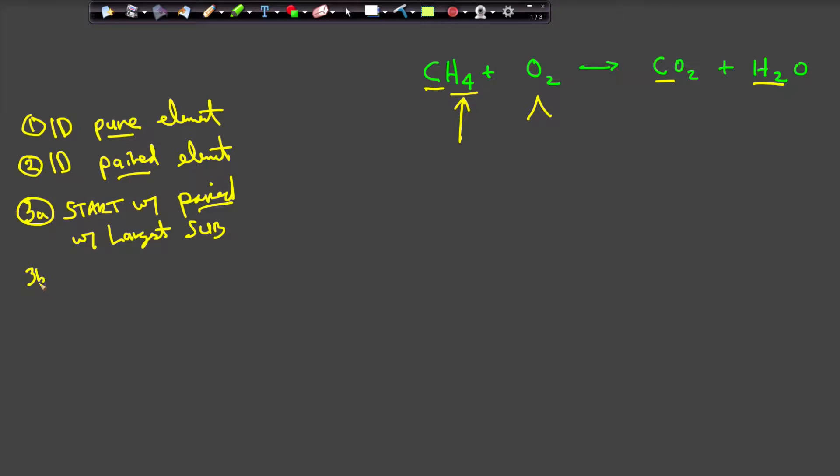By the way let me go ahead and tell you identifying these also tells me where I'm going to end my process and I'm going to end with one pure element. In case there's more than one pure element I'm going to wind up ending the process with a pure element. So with that let's start balancing the chemical equation.